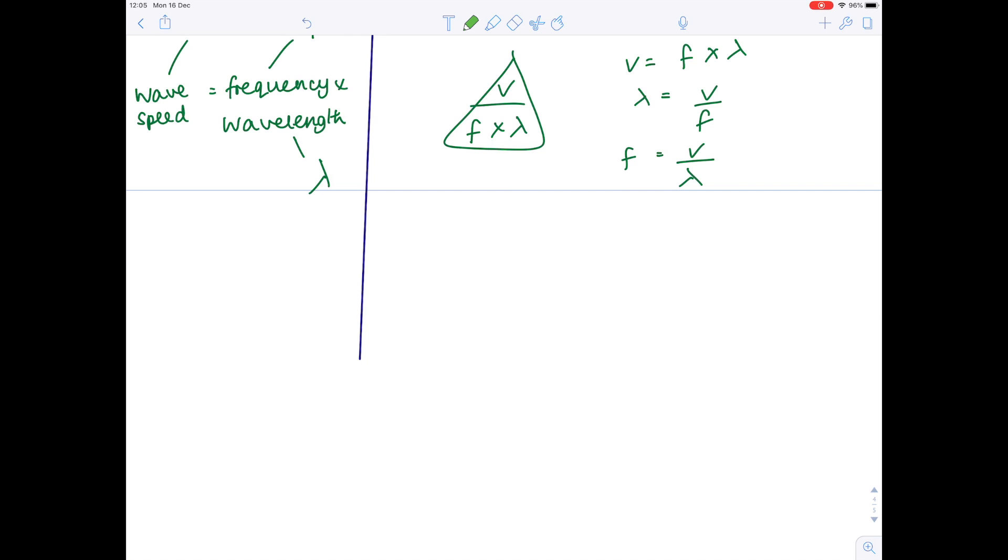Now looking at equations relating to transformers. So remember that the voltage on the primary divided by the voltage on the secondary equals number of turns on the primary coil divided by number of turns on the secondary coil. So Vp over Vs equals number of turns on the primary divided by number of turns on the secondary. So I would learn that exactly how it is written.